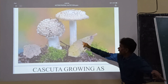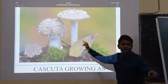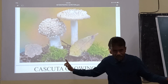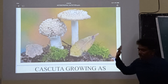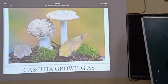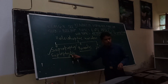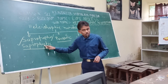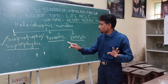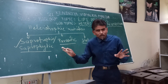So this is an example of saprotrophic mode of nutrition. The first type of heterotrophic mode of nutrition — that is saprotrophic nutrition — is now clear to you for Class 10 standard. Now the second is parasitic mode of nutrition.